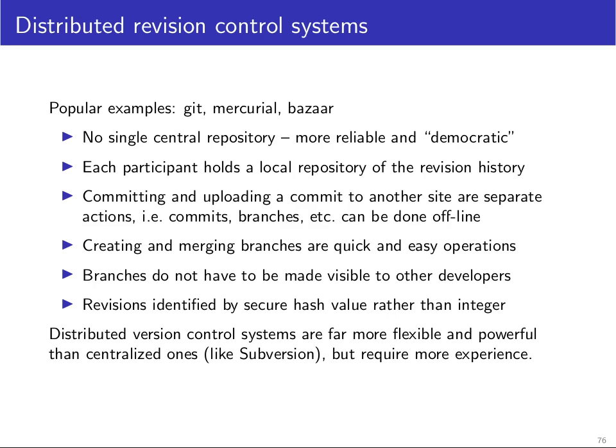A more evolved family of revision control systems are so-called distributed revision control systems, that do away with the single central repository. So everyone has their own copy of the repository, and they just mutually synchronize with each other every now and then whenever there is connectivity. That has a number of advantages — for example, you could say it's sort of more democratic. There is not one entity who has control over everything and could potentially manipulate the revision history.